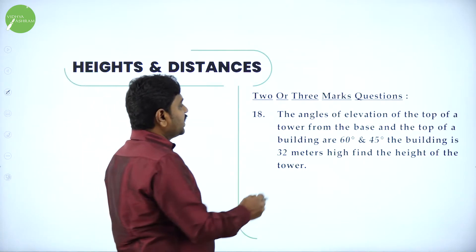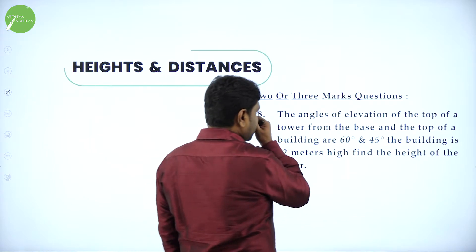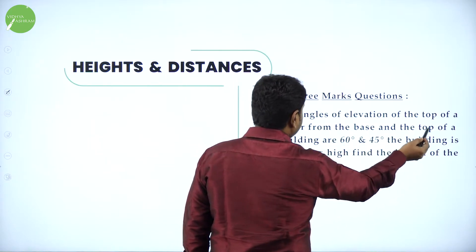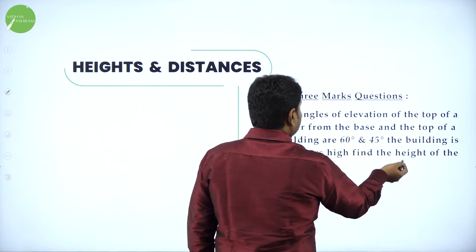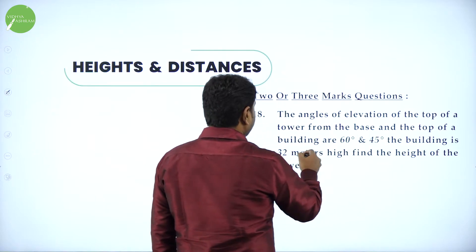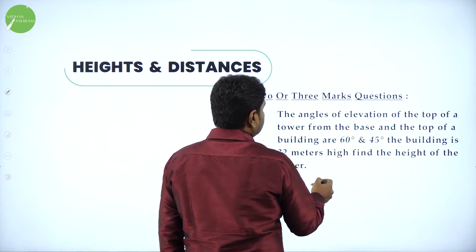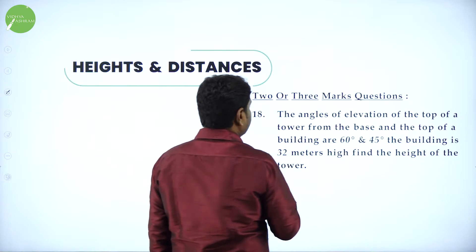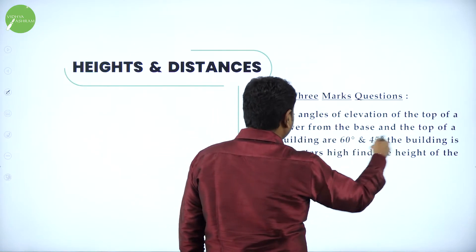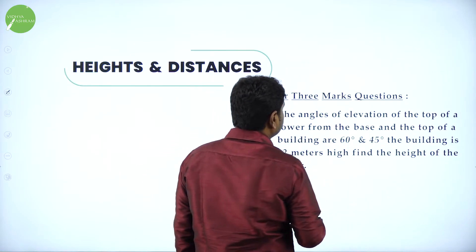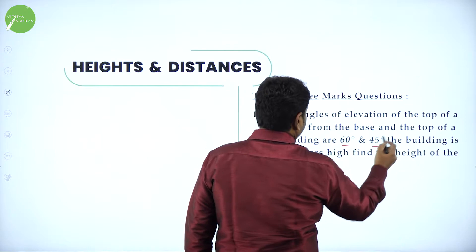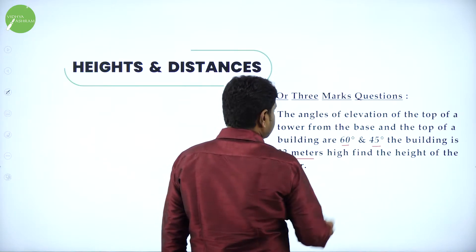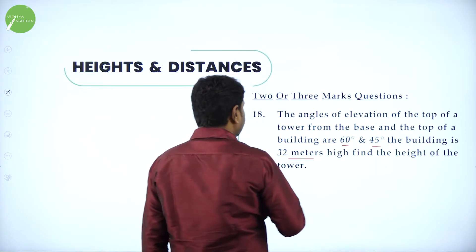Next problem: the angle of elevation of the top of a tower from the base and the top of a building are 60 degrees and 45 degrees respectively. The building is 32 meters high. Find the height of the tower.